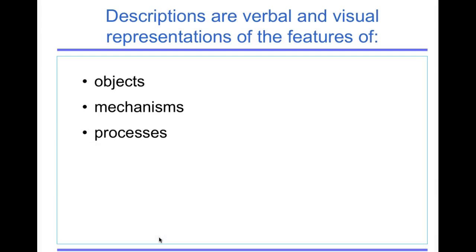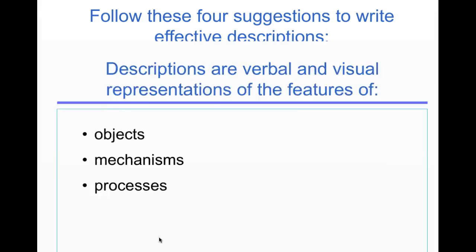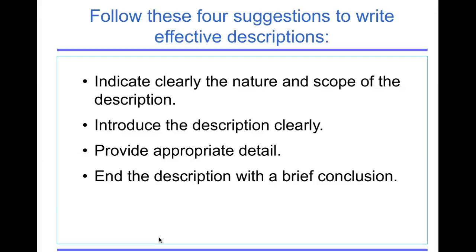Descriptions are verbal and visual representations of the features of an object, a mechanism, or a process. Use the following suggestions to write effective descriptions. Indicate clearly the nature and scope of the description. Introduce the description clearly. Provide the appropriate level of detail and end the description with a brief conclusion, so make it a thorough complete unit of information.